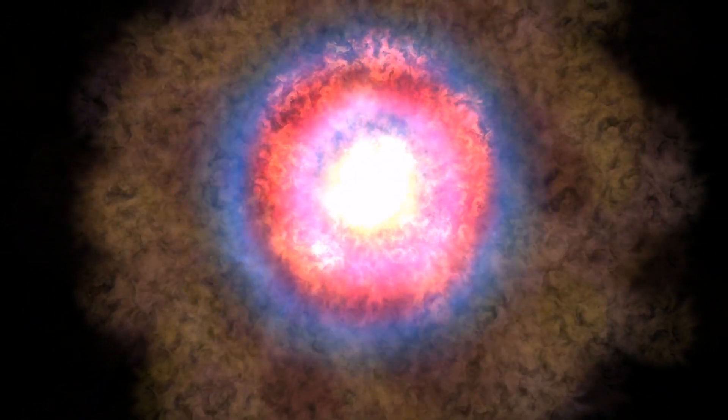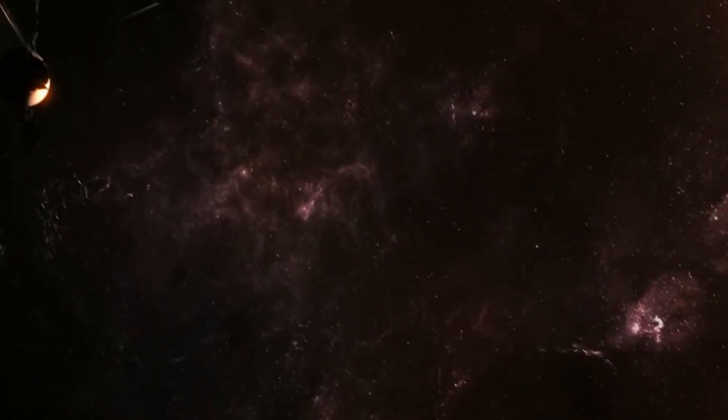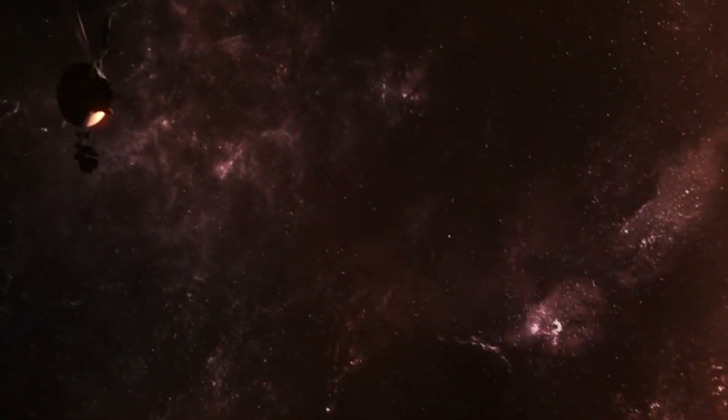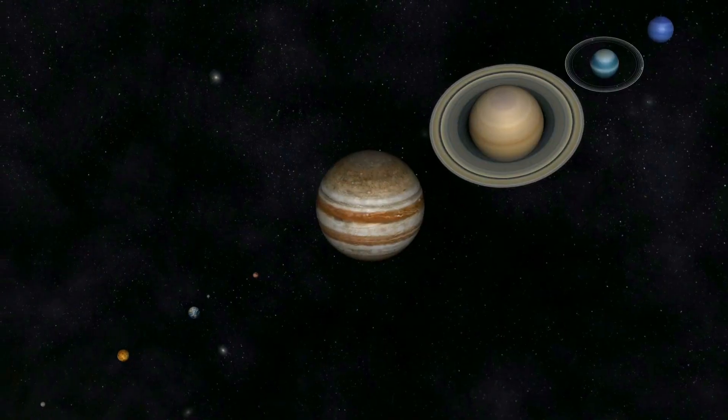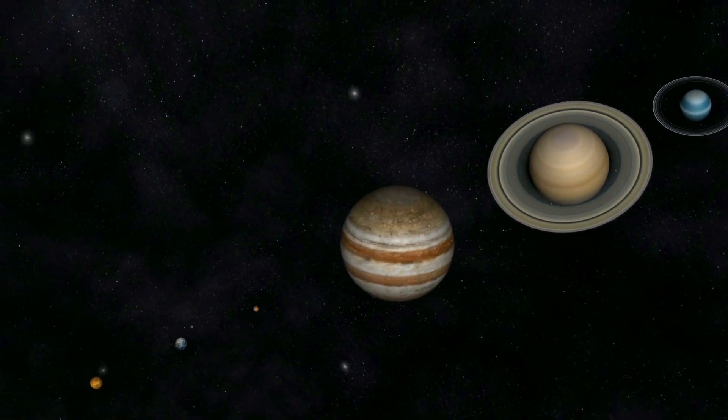Supernova also sends shock waves into space, albeit not as violently as CMEs. Supernova shock waves spark the solar system's creation. Voyager 2 implies that the sun may have influenced the development of life on other planets in our solar system and beyond.